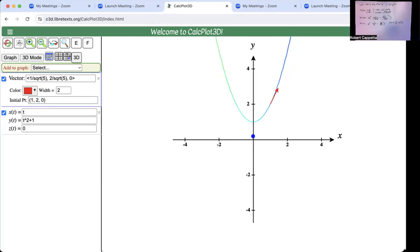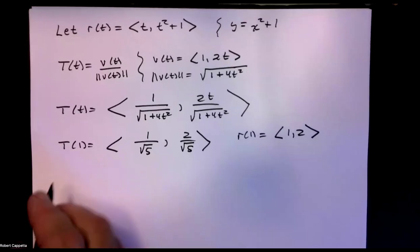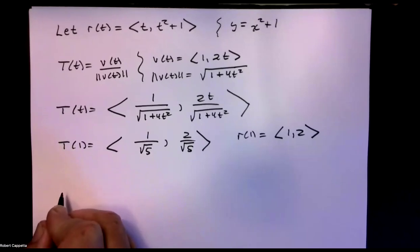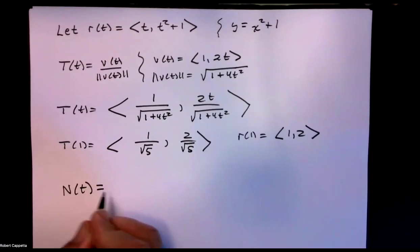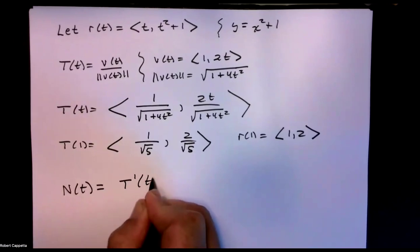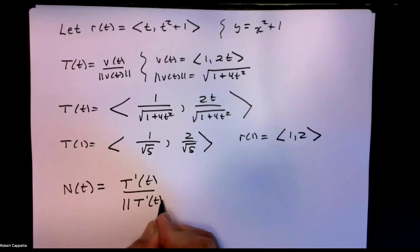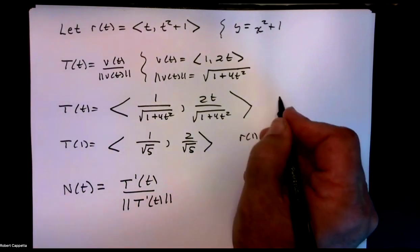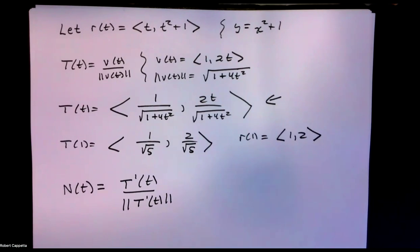That one is relatively easy. The next one, in terms of the definition, is pretty challenging. We showed that T' is orthogonal to T, and with that we developed a formula for the unit normal: N(t) = T'(t) divided by the magnitude of T'(t). So we're going to need to focus on T, taking its derivative, and then finding its magnitude to compute N(t).